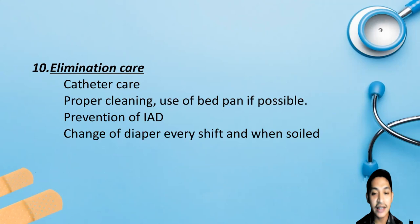The tenth care essential is elimination care. Hourly draining of urine and changes to the urinary catheter should be routinely done. Routinely check the diaper for stool and change immediately when soiled. It is recommended to change the diaper every shift and when soiled.